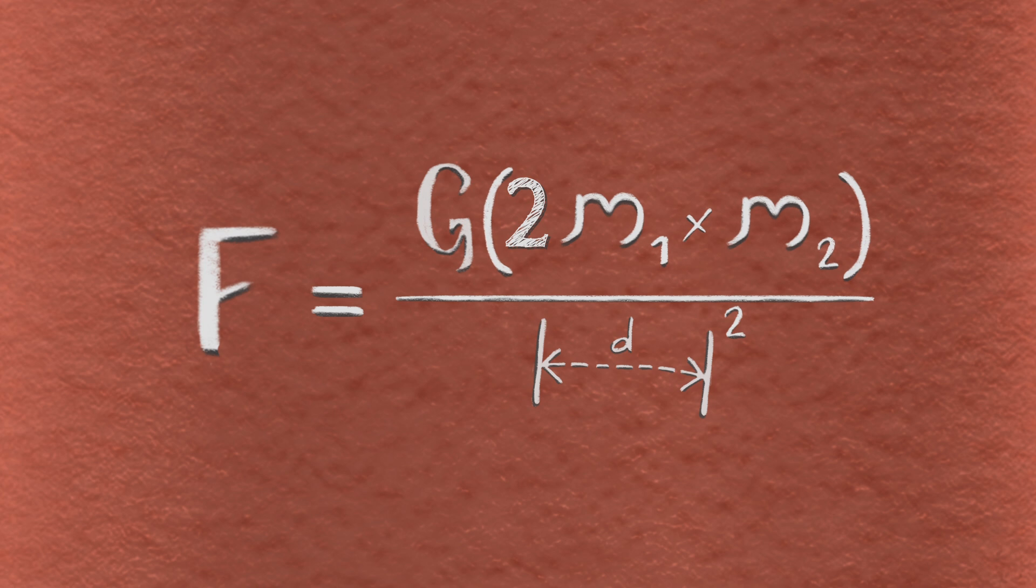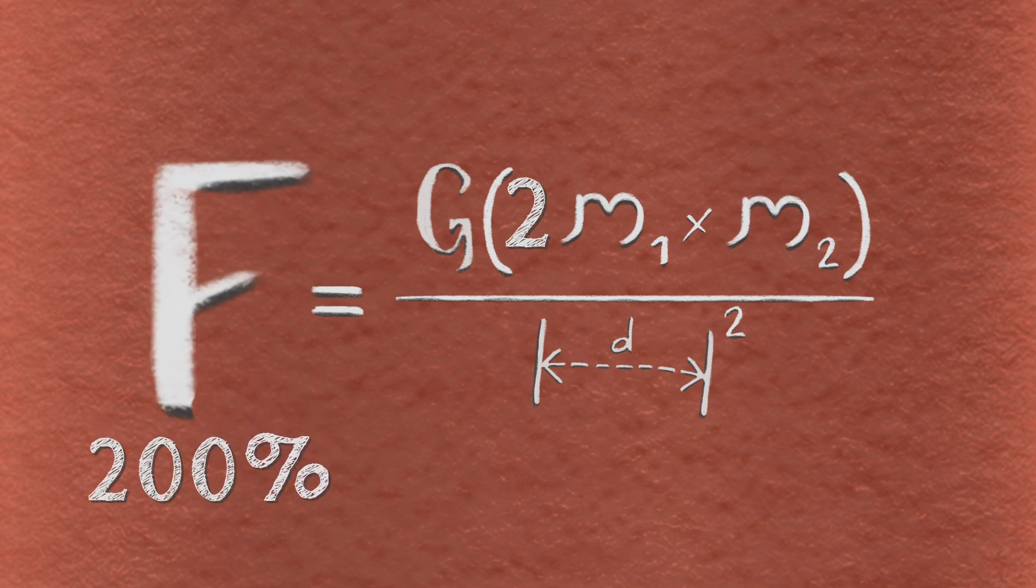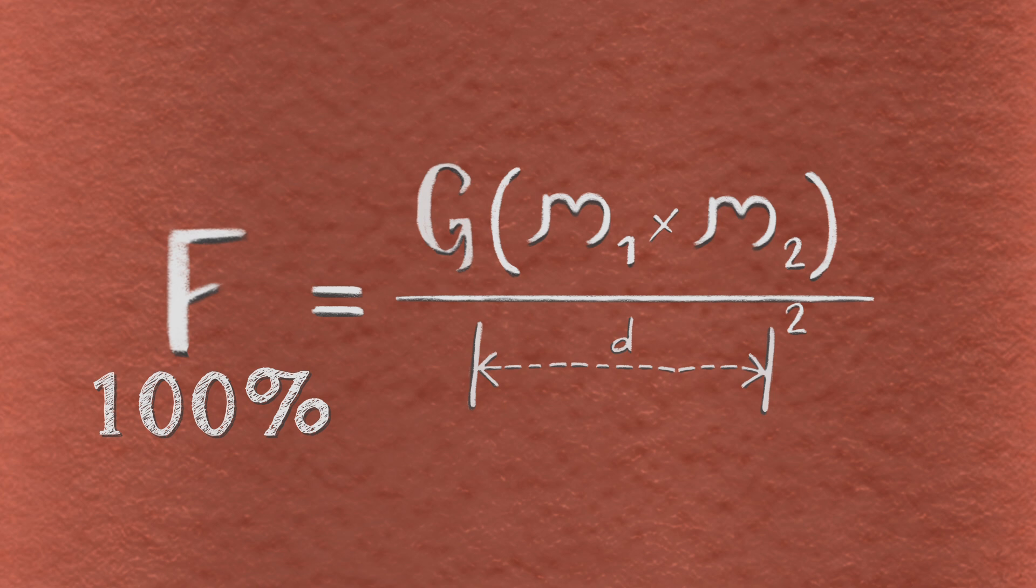If you doubled the mass of one of the objects, the force between them would double, too. If the distance between them doubled, the force would be one-fourth as strong.